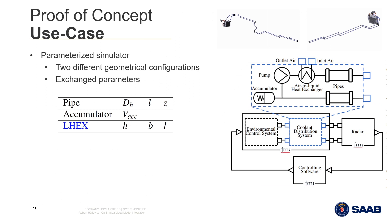I will now present the use case to demonstrate that the developed methodology and functionality works. Here you can see a schematic description of a small simulator consisting of three connected FMUs: a modeled environmental control system, a coolant distribution system, a consumer of coolant power — in this case a radar — and a controlling software ensuring the consumer can operate at desirable operating conditions. Two different configurations of the coolant distribution system are modeled in CATIA. The parameters extracted from these geometry models are pipe hydraulic diameters, lengths, and pressure drop coefficients. Additionally, the accumulated volume and air-to-liquid heat exchange geometry is specified by the geometry models.